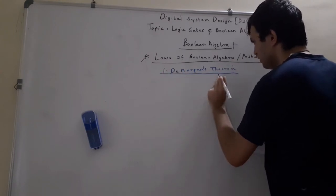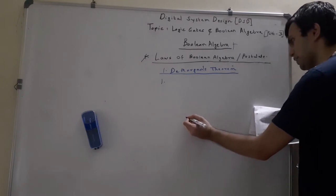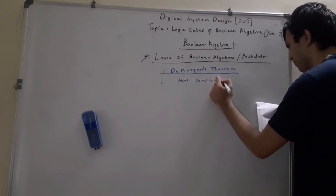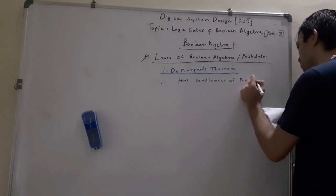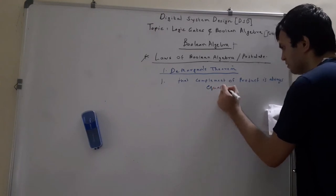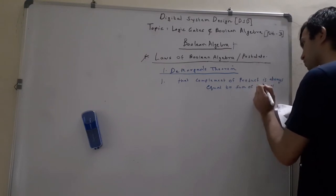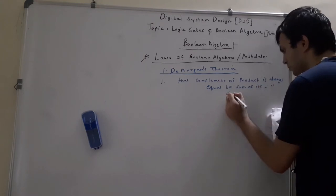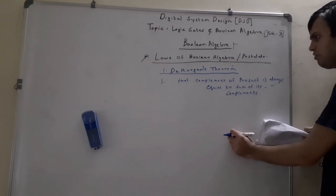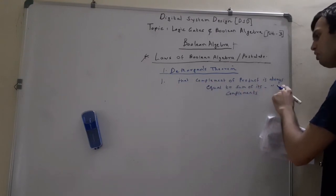In De Morgan's theorem there are two different parts. The first theorem states that the complement of a product is always equal to the sum of its individual complements. This is the first statement of De Morgan's theorem: complement of product is always equal to the sum of its complements.